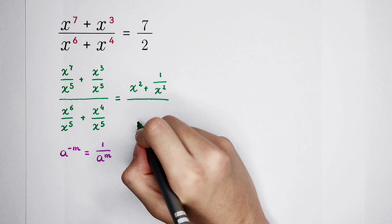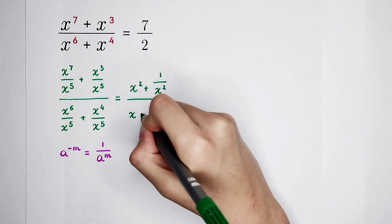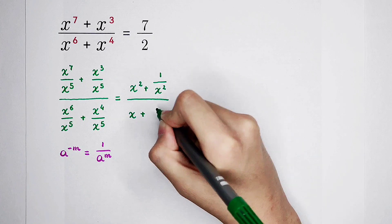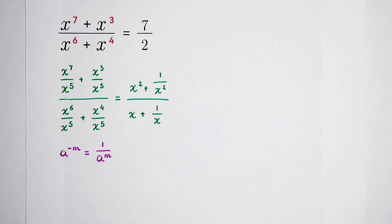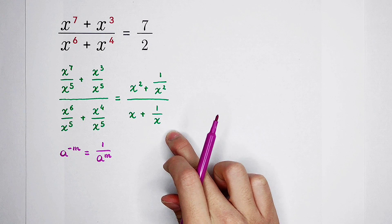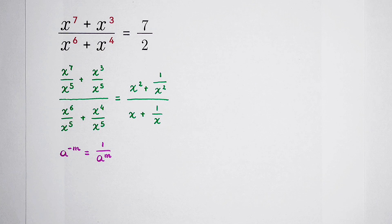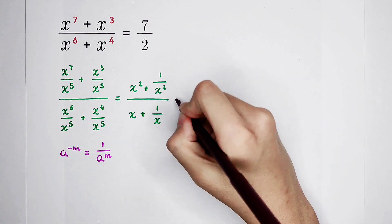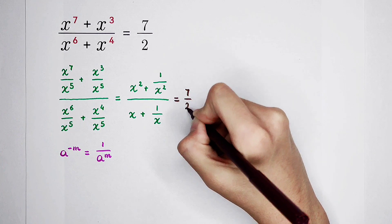The denominator simplifies the same way: x to the power of 6 over x to the power of 5 gives x, and x to the power of 4 over x to the power of 5 gives x to the power of negative 1, which is 1 divided by x. Now this is our new left side — the highest exponent is only 2, not 7. And the right side is still 7 over 2.